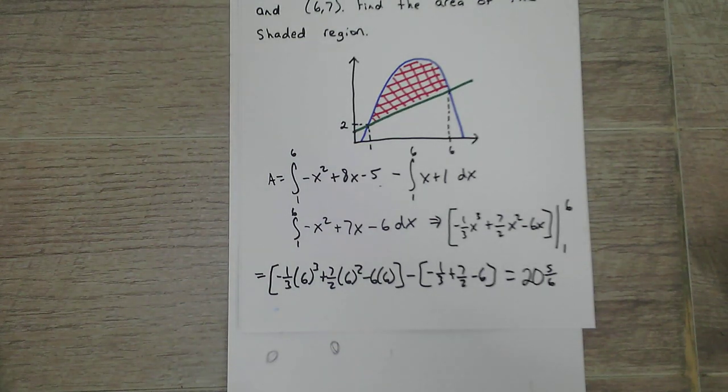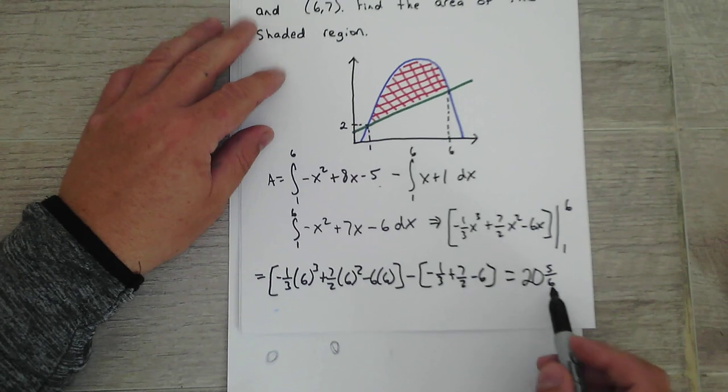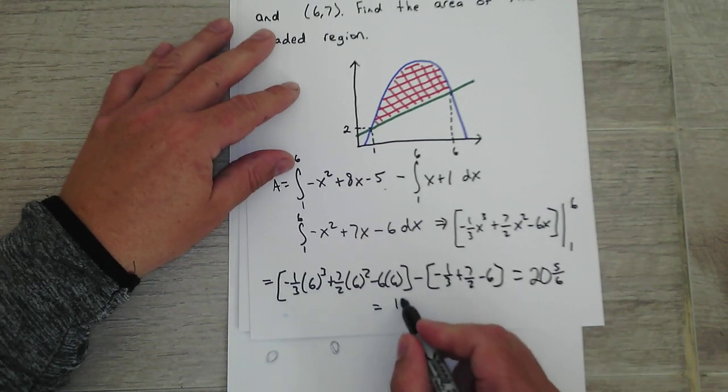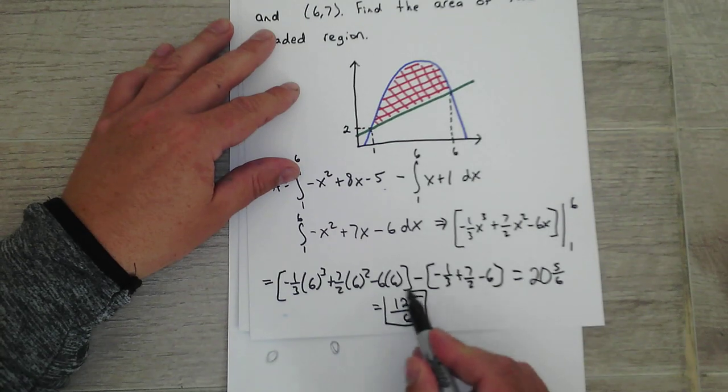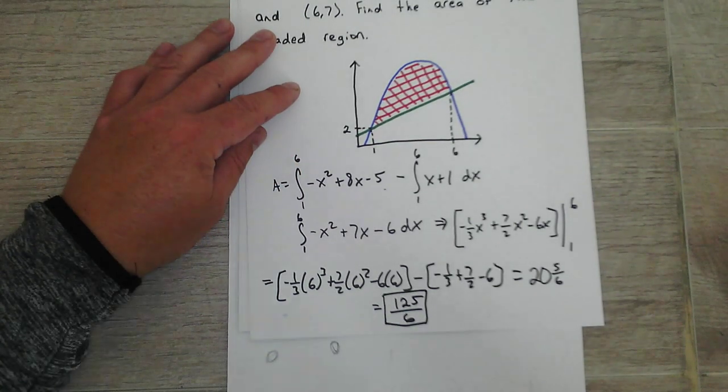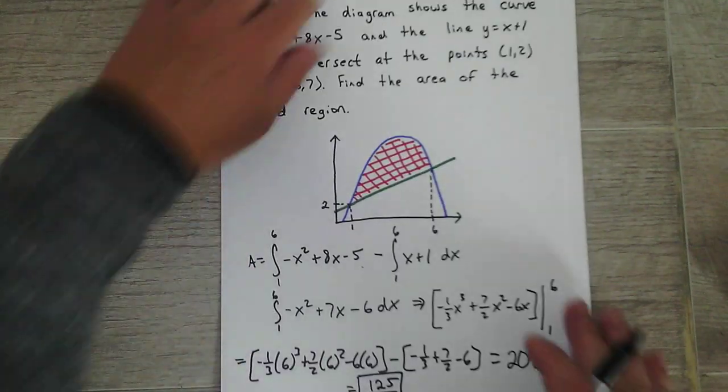Anyways the book gives it as 20 and 5/6, which as you know, I don't know why the book gives it that way because they do not want mixed numbers. Okay, so let's see, 20 times 6 is 120 plus 5, so 125 over 6. That's how you should write that.